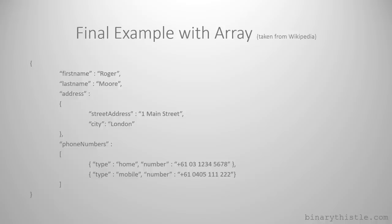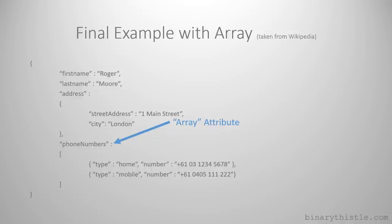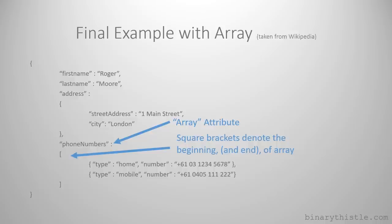And then finally, this is our slightly more complex one. I've removed a couple of attributes from the previous examples - notably age, is alive, and one of the address elements - purely for clarity. This is introducing an array. You can see we have a new phone numbers attribute - similar to the address attribute, it doesn't contain a single value, it contains an array of objects. Arrays in JSON are denoted by square brackets. The phone number attribute contains an array of other objects - in this case, each object is a phone number represented by type (home and mobile) and a number. You can add as many of those as you like.